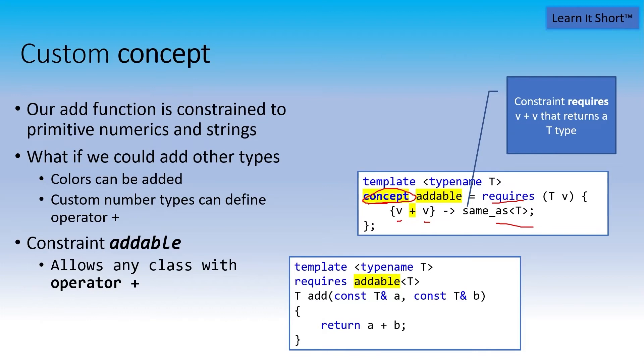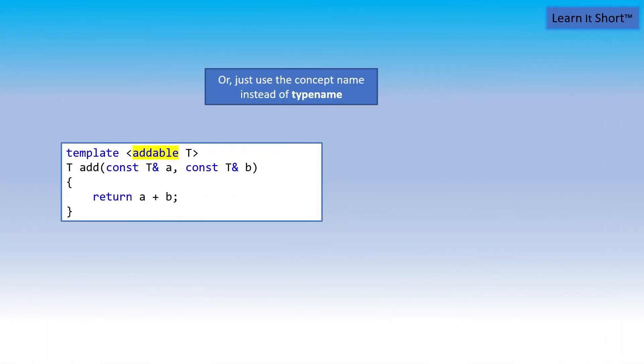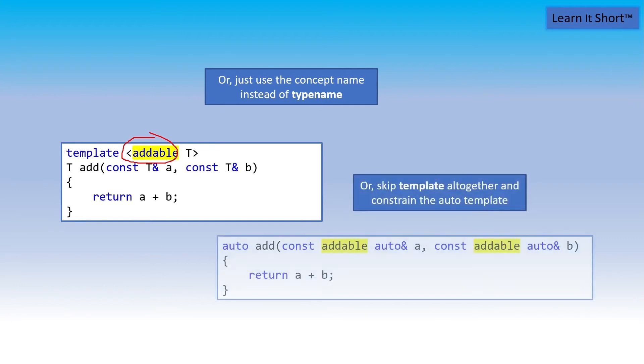Even simpler: forget the requires keyword and just put the constraint, the concept is what they're called, into the template where we used to put the word class or typename. That's pretty cool. Or if I want to skip the template syntax altogether and use our new abbreviated template definition using the auto keyword, I can add addable as kind of an adjective to further describe what we're expecting the input parameters to look like.